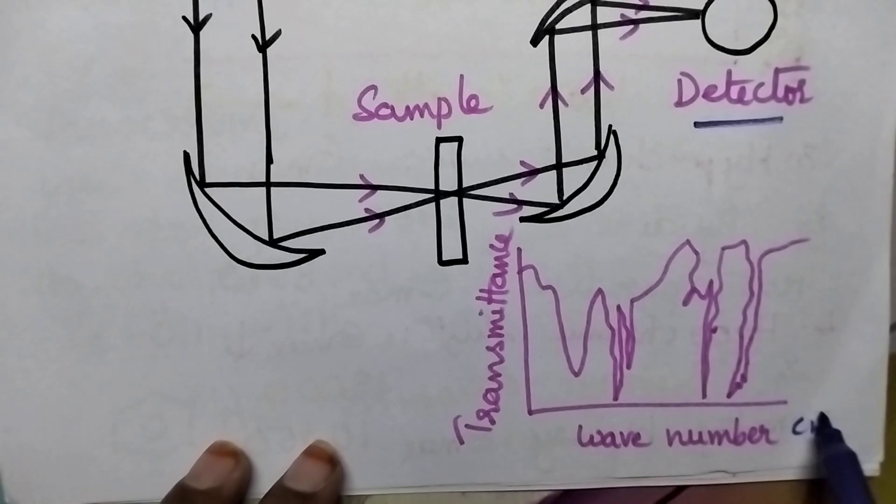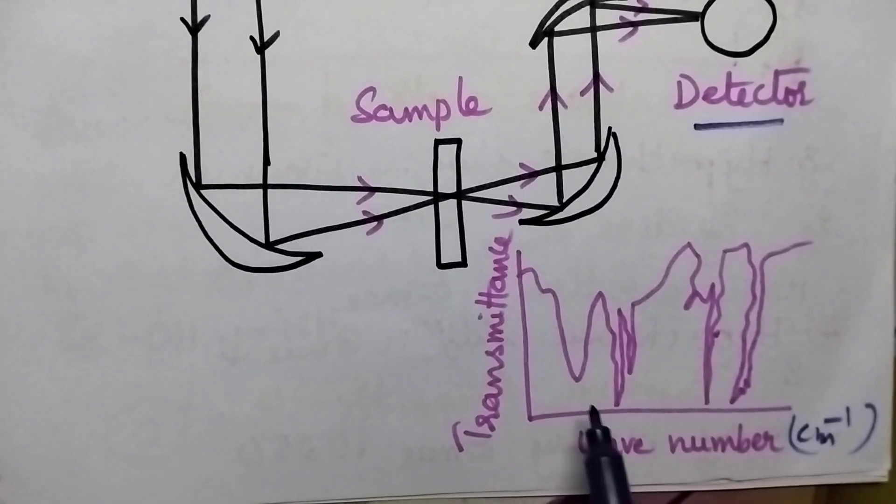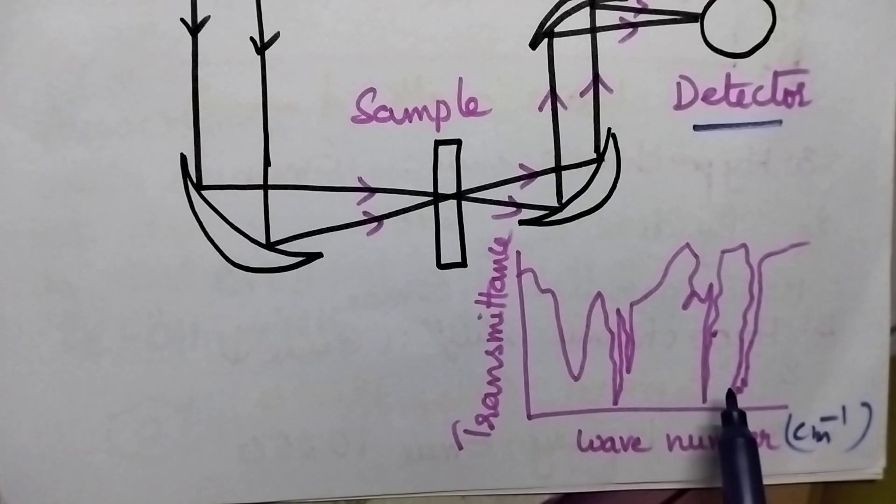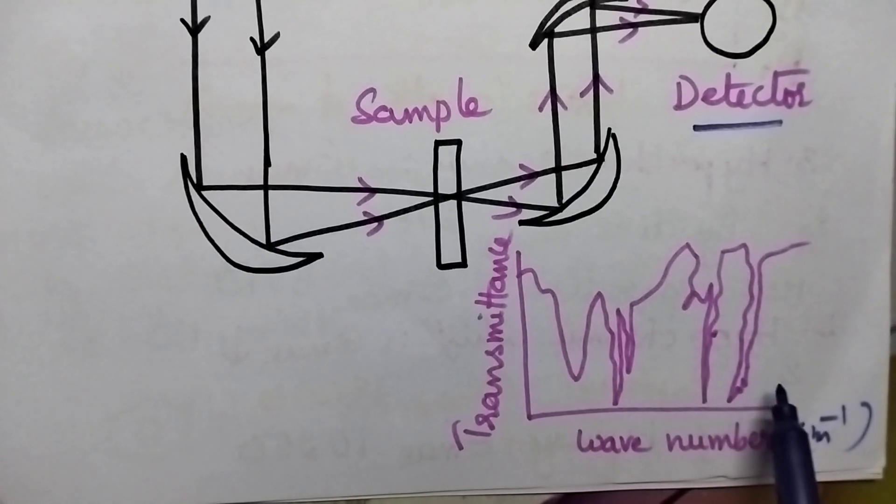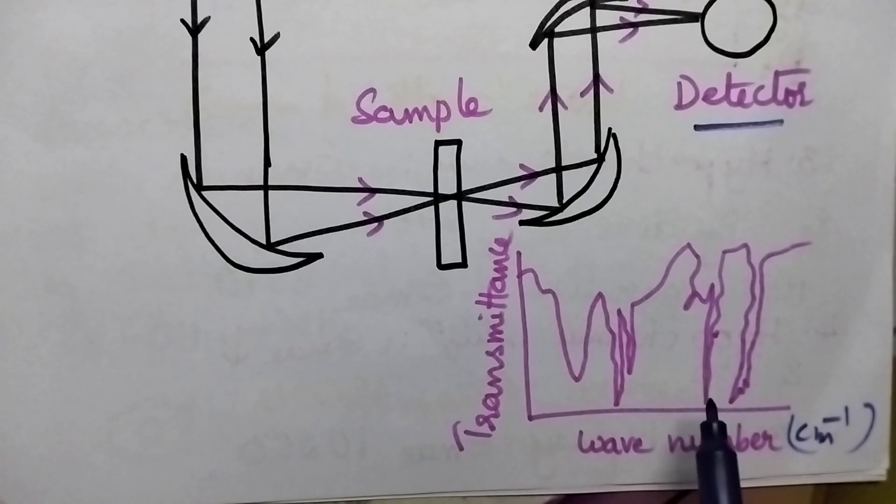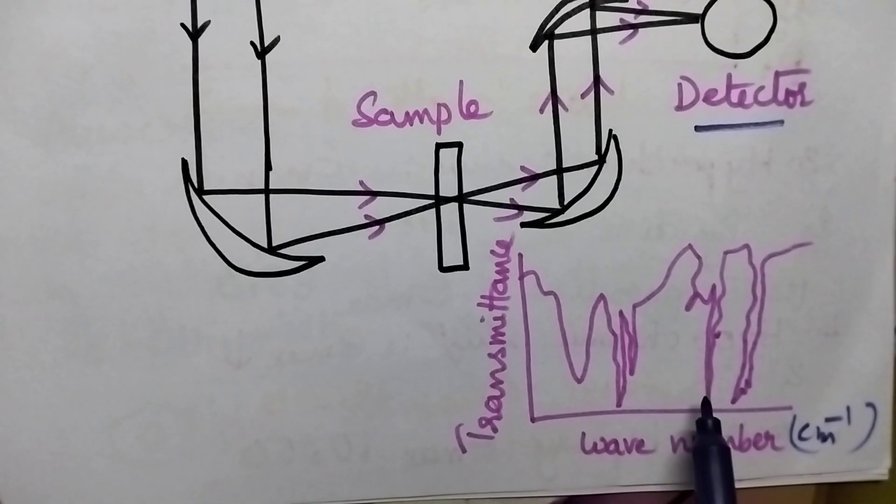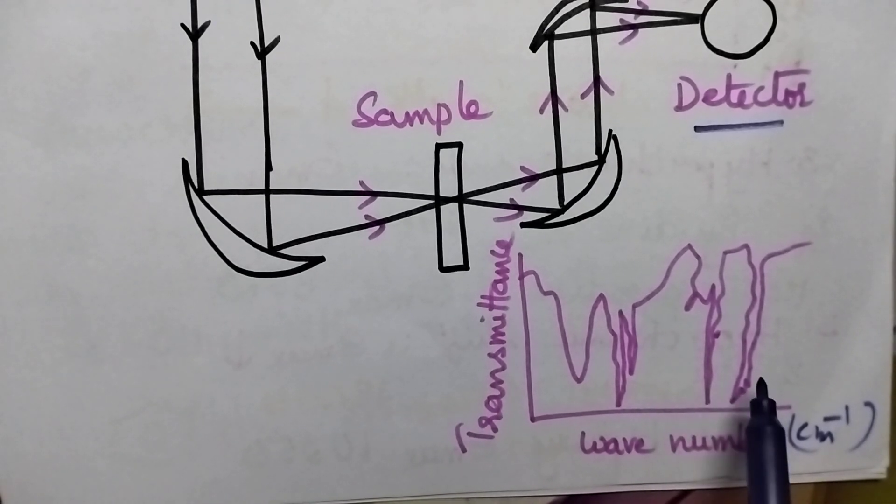In the IR region, it gives inverted sharp peaks. By observing the IR spectrum obtained for the sample, it is possible to identify the nature of the functional groups present in the given compound.